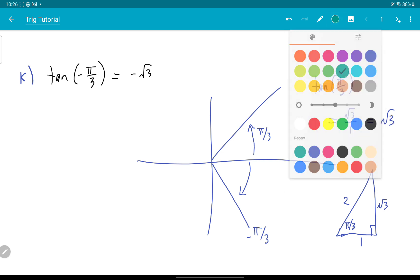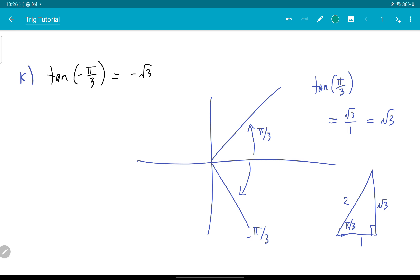But now I use my CAST rule. And down here only cosine is positive, so the tan will be negative. So my tan of negative π over 3 will not be this root 3, it will be negative root 3.